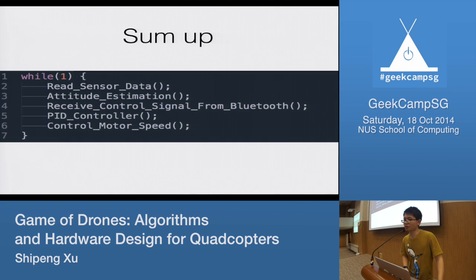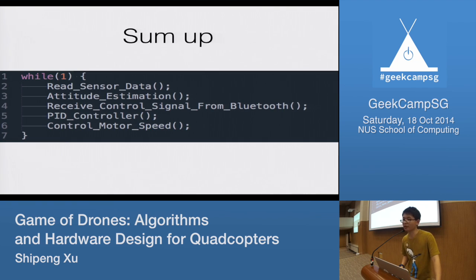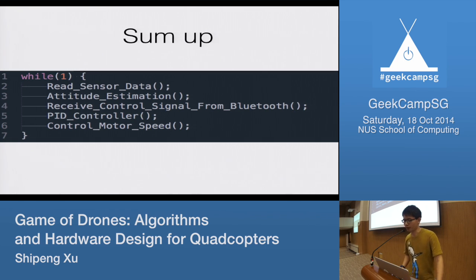To sum up how to make the quadcopter fly: first we read the sensor data, then we calculate attitude information, then we receive control input from Bluetooth, then we run the PID controller, and then we control the motor speed. Basically, it works like that.